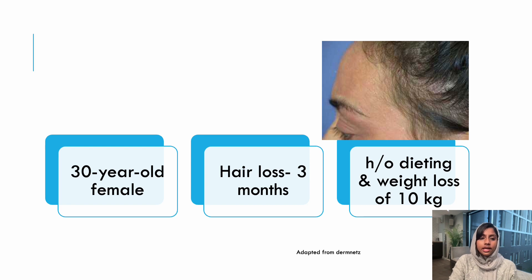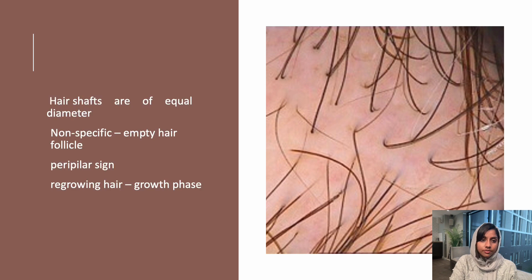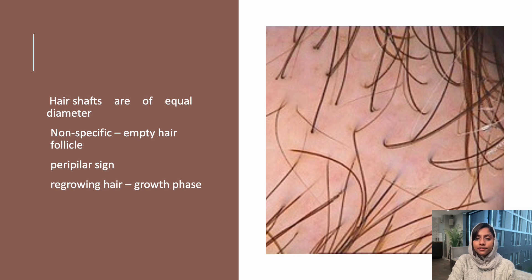The next clinical scenario: a 30-year-old female comes with hair loss for the past three months. She also gives a history of dieting and weight loss of 10 kg. On trichoscopy, the number of hairs per follicle is less, but there is not much variation in hair diameter diversity. This indicates telogen effluvium — features include equal diameter hair shafts, possibly empty hair follicles, and a peripylar sign. In the regrowing phase, you can see a lot of regrowing hairs.